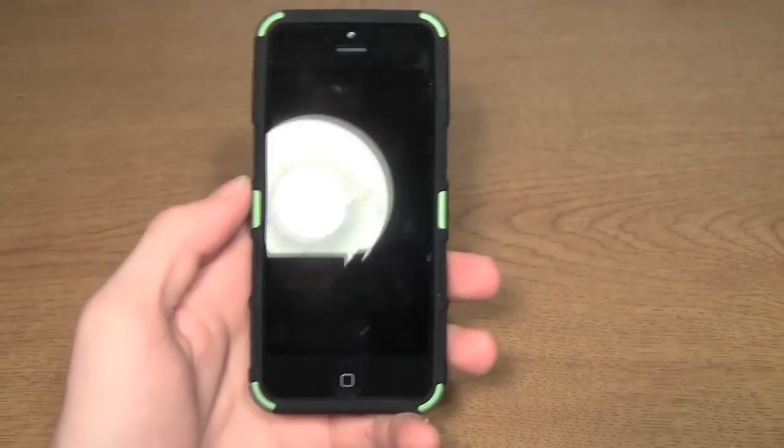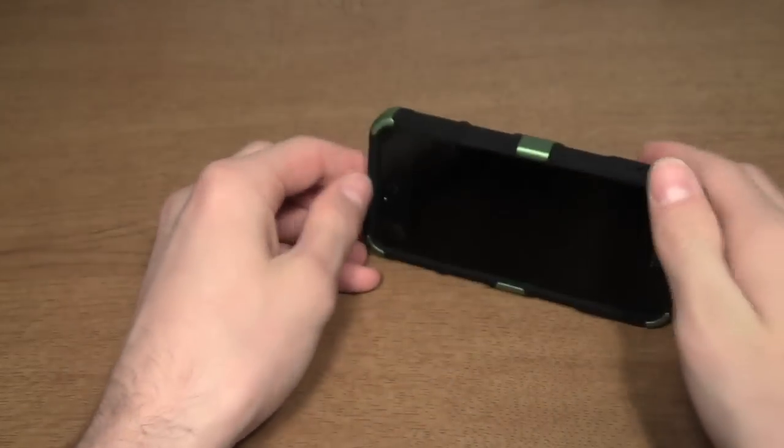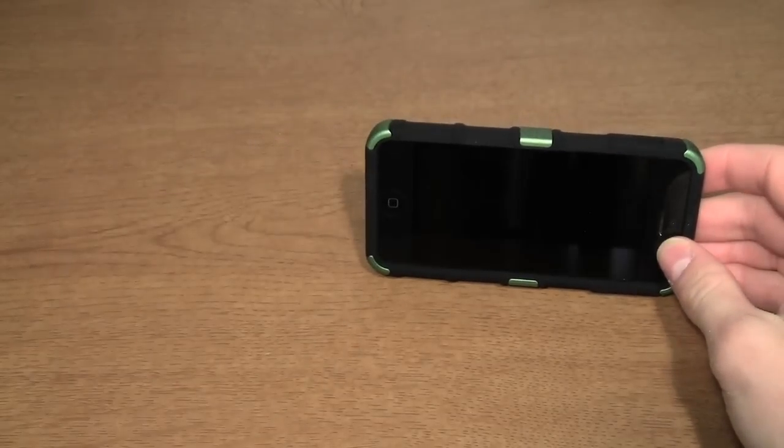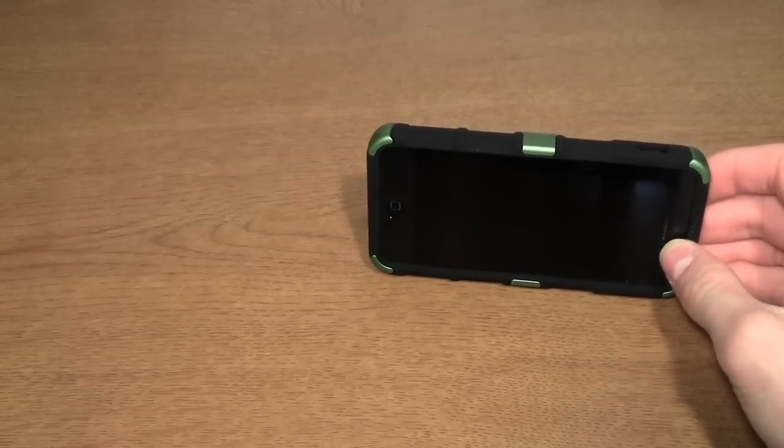Now there's also a variation of this case with a metal kickstand on the back that just flips out so you can prop your phone up. With the holster that one is $54.95 and without the holster that one is $34.95.